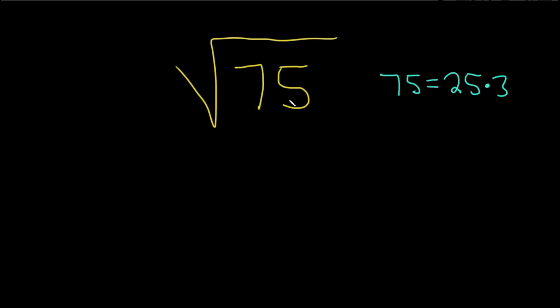So let's go ahead and come over here and then replace the 75 with what we have over here. So this will be the square root of, instead of 75, we'll just write 25 times 3. So 25 times 3, just like that.